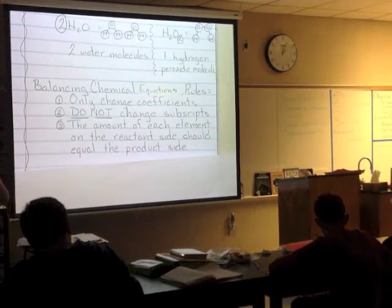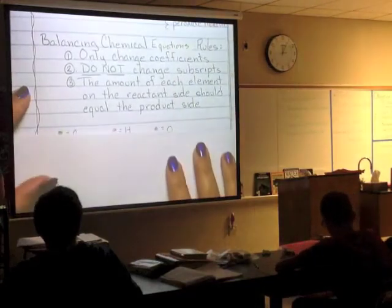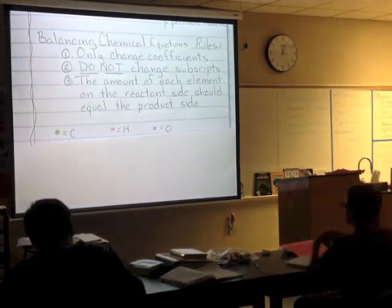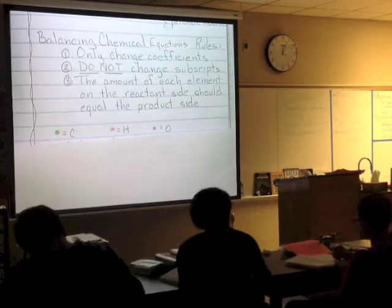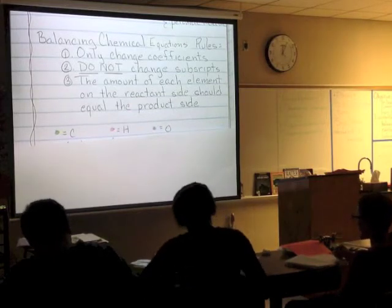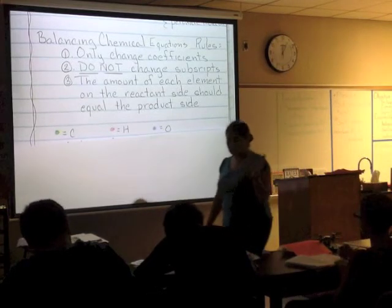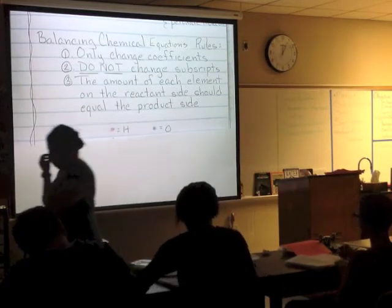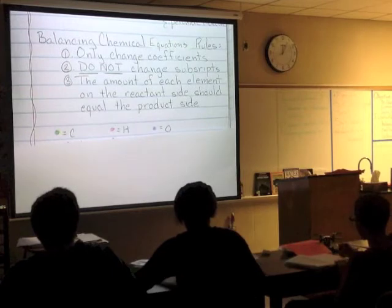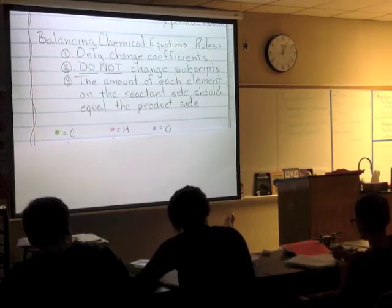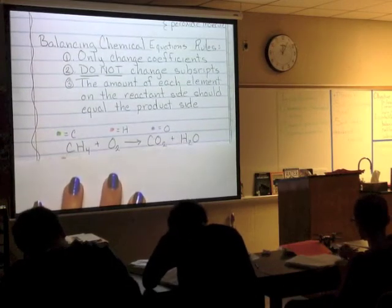So this is where we're going to need some color. We're going to balance the equation by drawing the molecules, and we're going to use three different colors to represent our three elements. You don't have to use the same three colors that I did — just use your three and make sure you have a key. I have a green dot for carbon, a red dot for hydrogen, and a purple dot for oxygen.